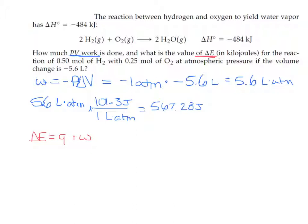Delta H really means enthalpy but we often call it heat, and most of the time that's fine. The reason is that under most conditions chemists work under, we're at constant pressure — atmospheric pressure, specifically one atmosphere. Under constant pressure conditions, q equals delta H. The notation for this is q sub p equals delta H, meaning at constant pressure, heat is the same thing as delta H.